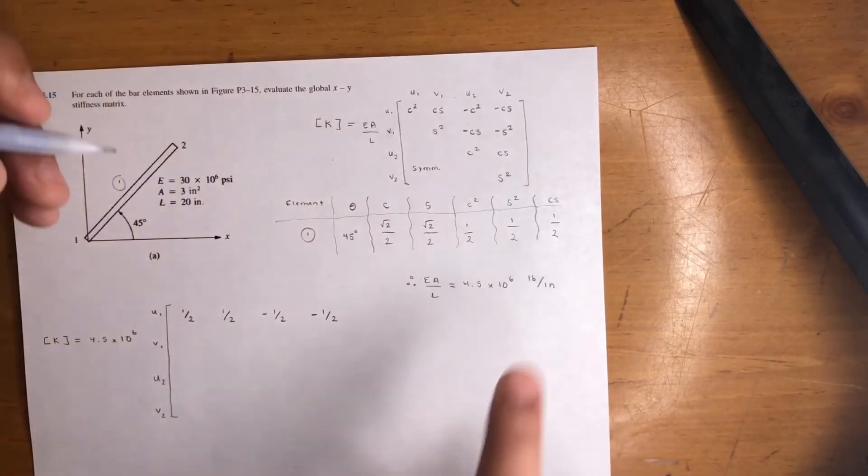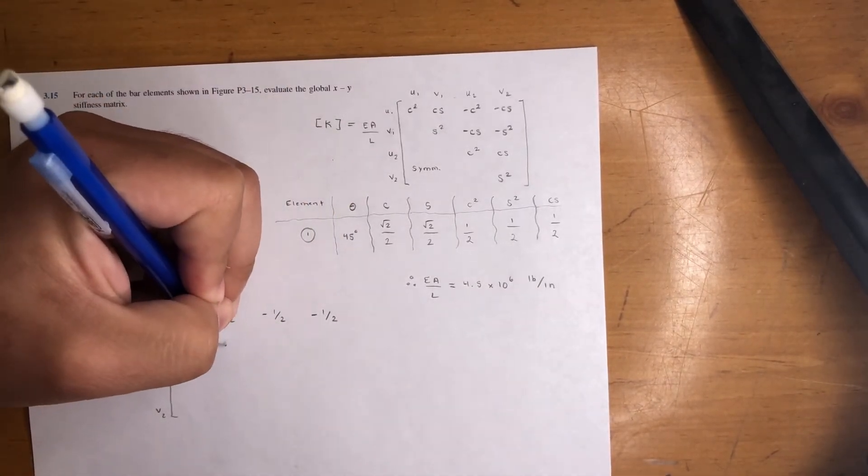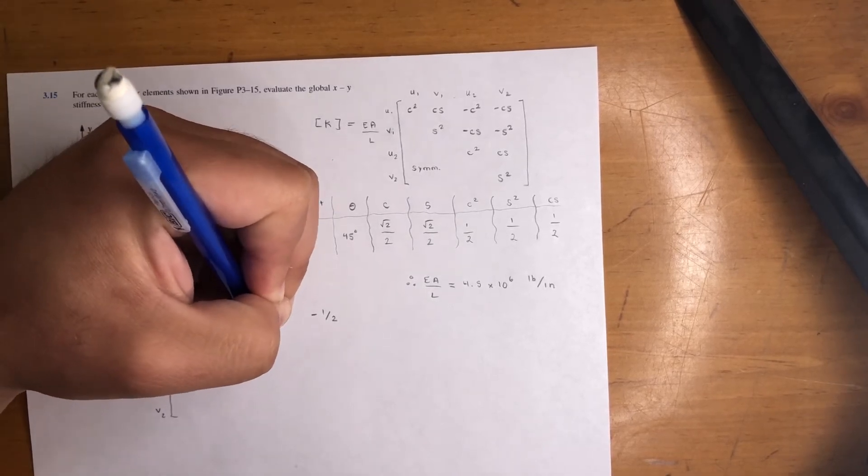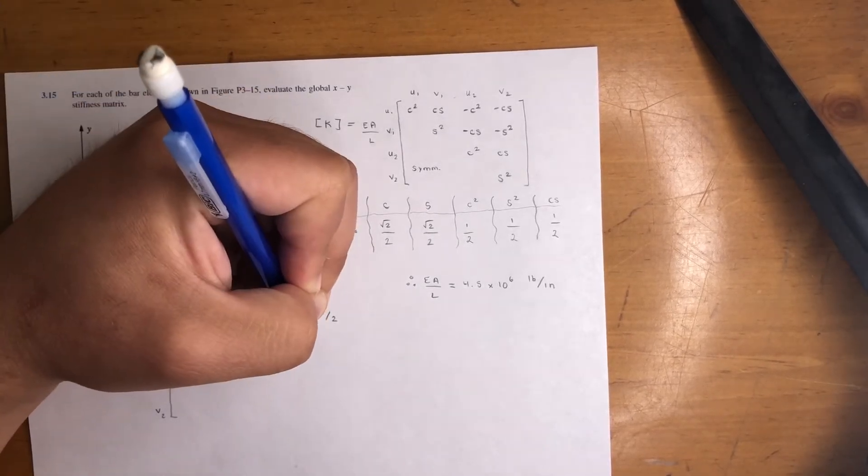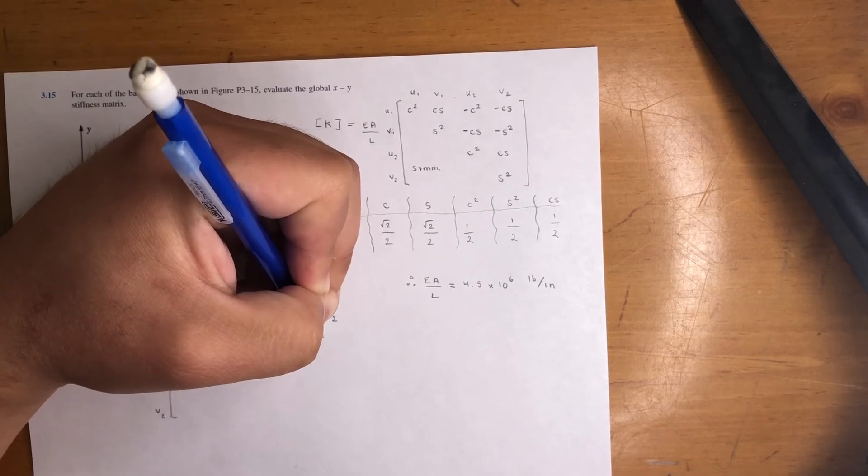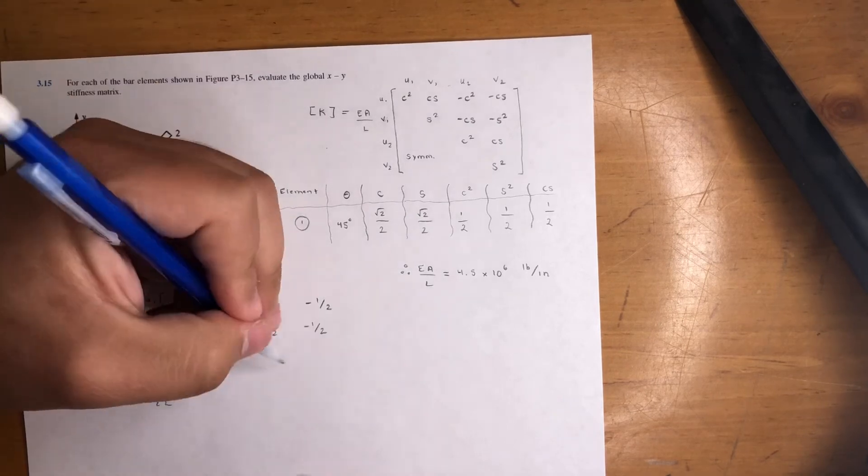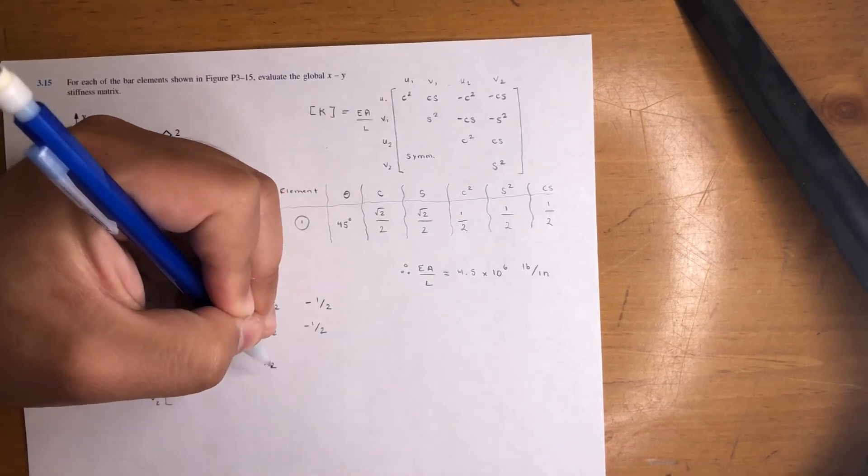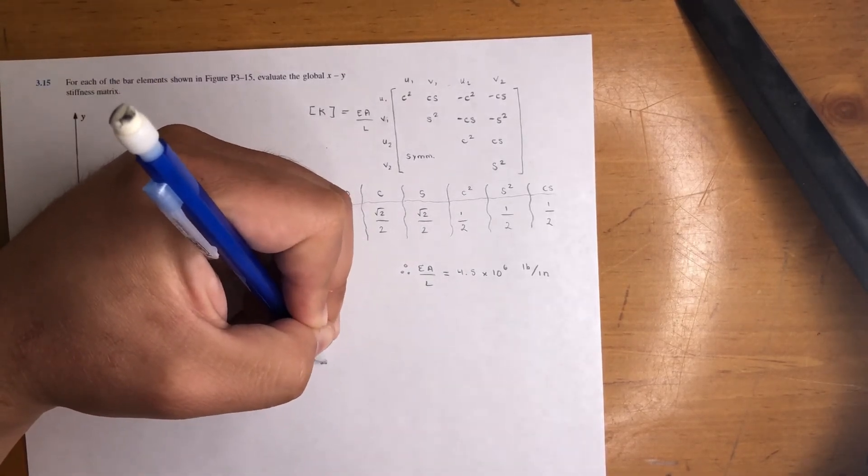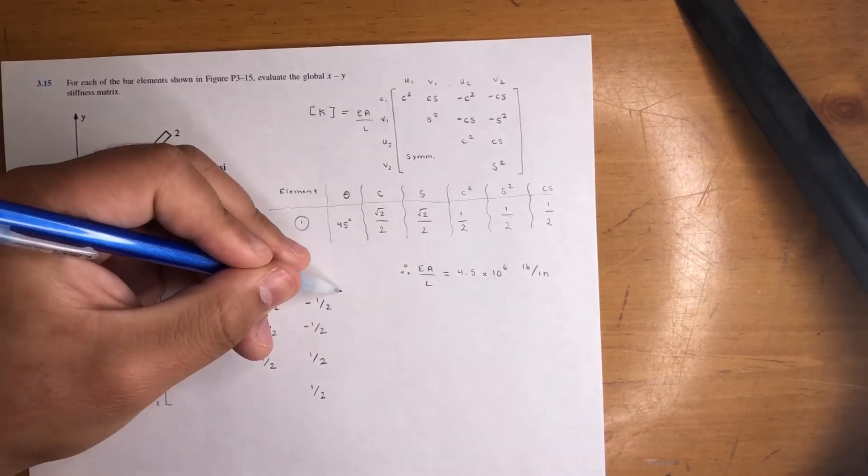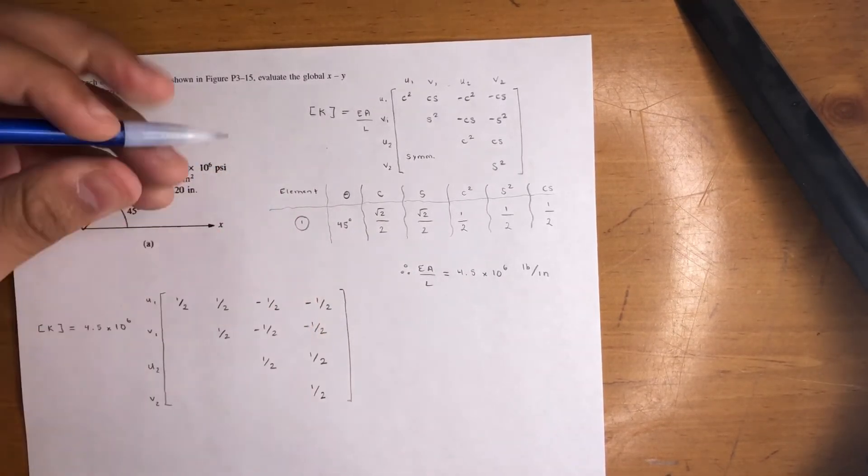Next one is S squared, which is one half. Negative Cs is negative one half. Negative S squared is negative one half. Keep it going—next is C squared, which is one half. Then Cs, which is one half. And finally, S squared is one half. That's pretty much it. That's the answer right here.